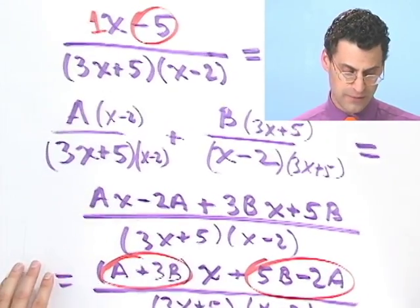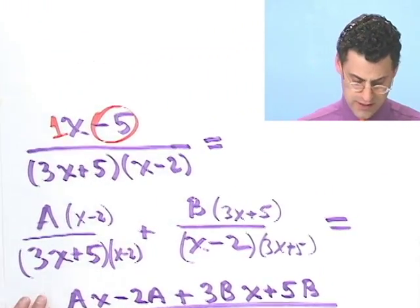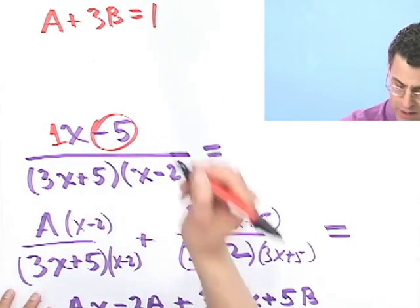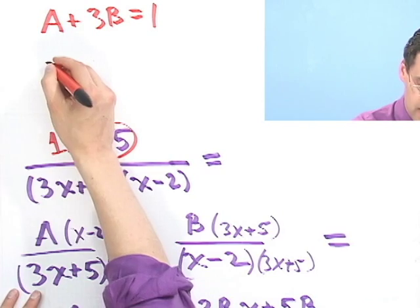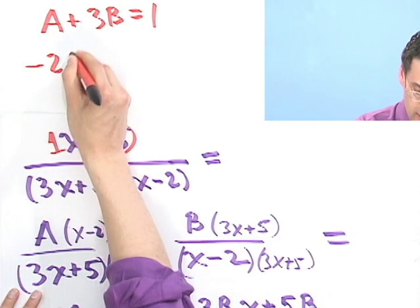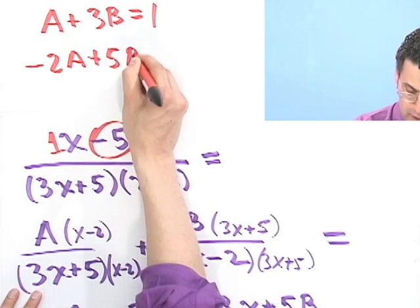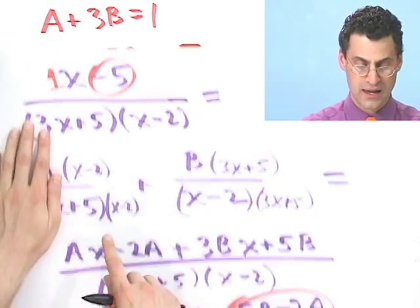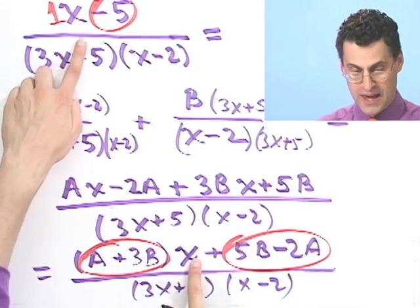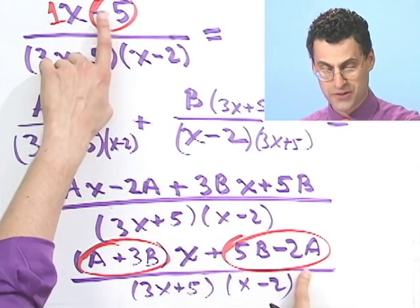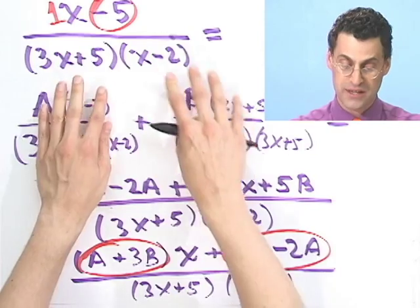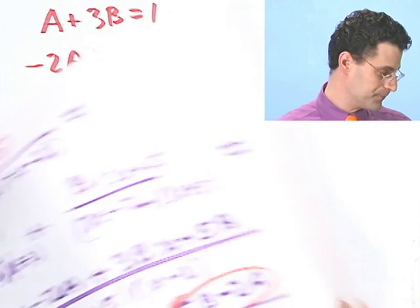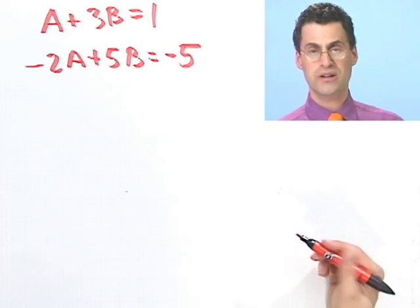So that gives me two equations and two unknowns. And so in fact, what I see here is the following. I see that a plus 3b equals 1. And I also see that minus 2a plus 5b equals minus 5. See, those two equations came from the fact that one has to equal the term in front of the x. And this has to equal the term here.